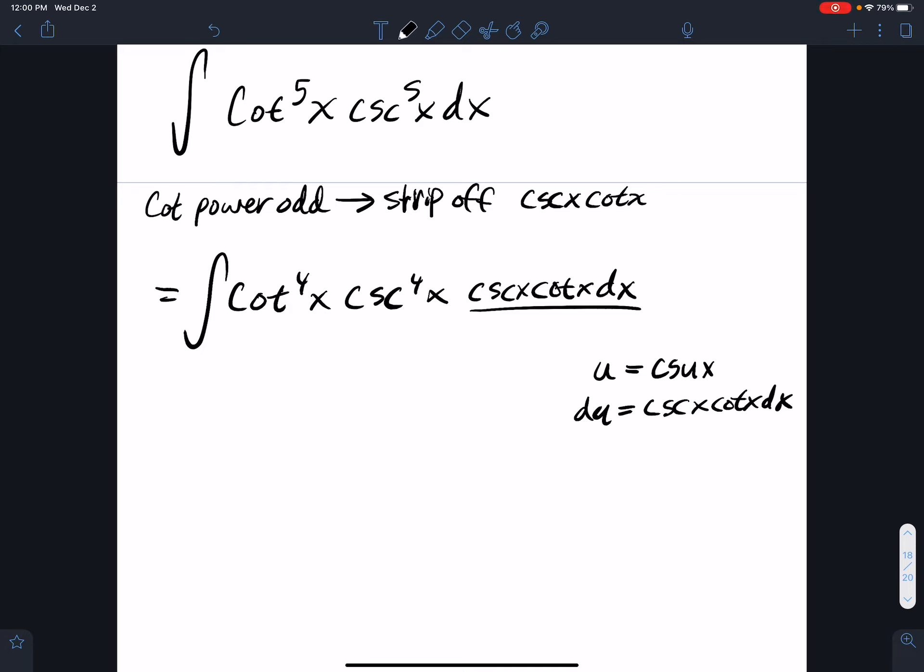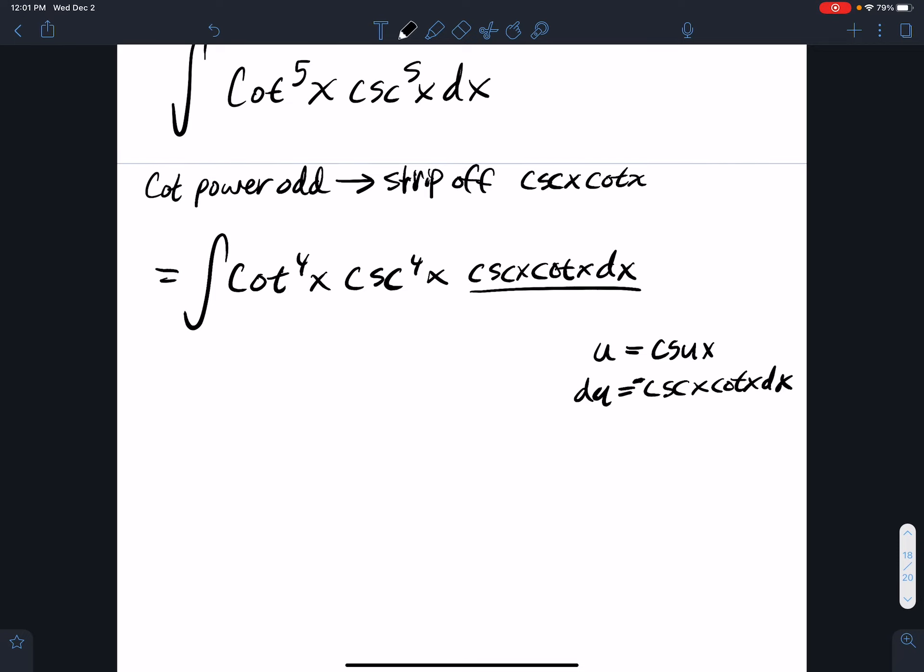Okay, remember cosecant's derivative gives me negative cosine, cosecant cotangent all produce negative derivatives.